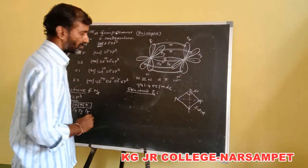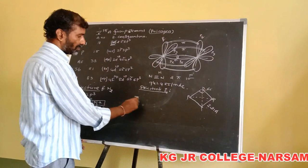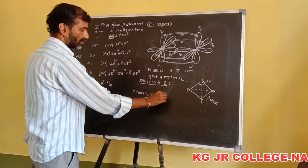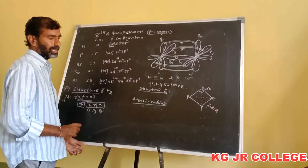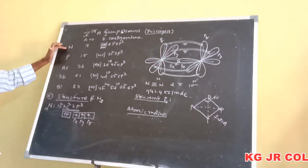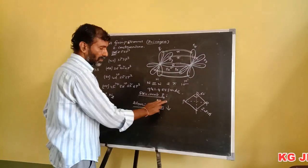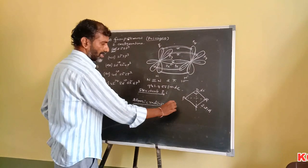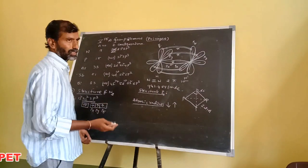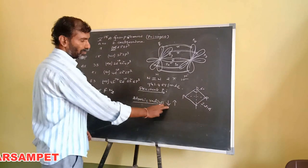General characteristics of the 5th group elements. First, atomic radius: atomic radius increases from nitrogen to bismuth in the group, from top to bottom, because electrons enter into different shells.